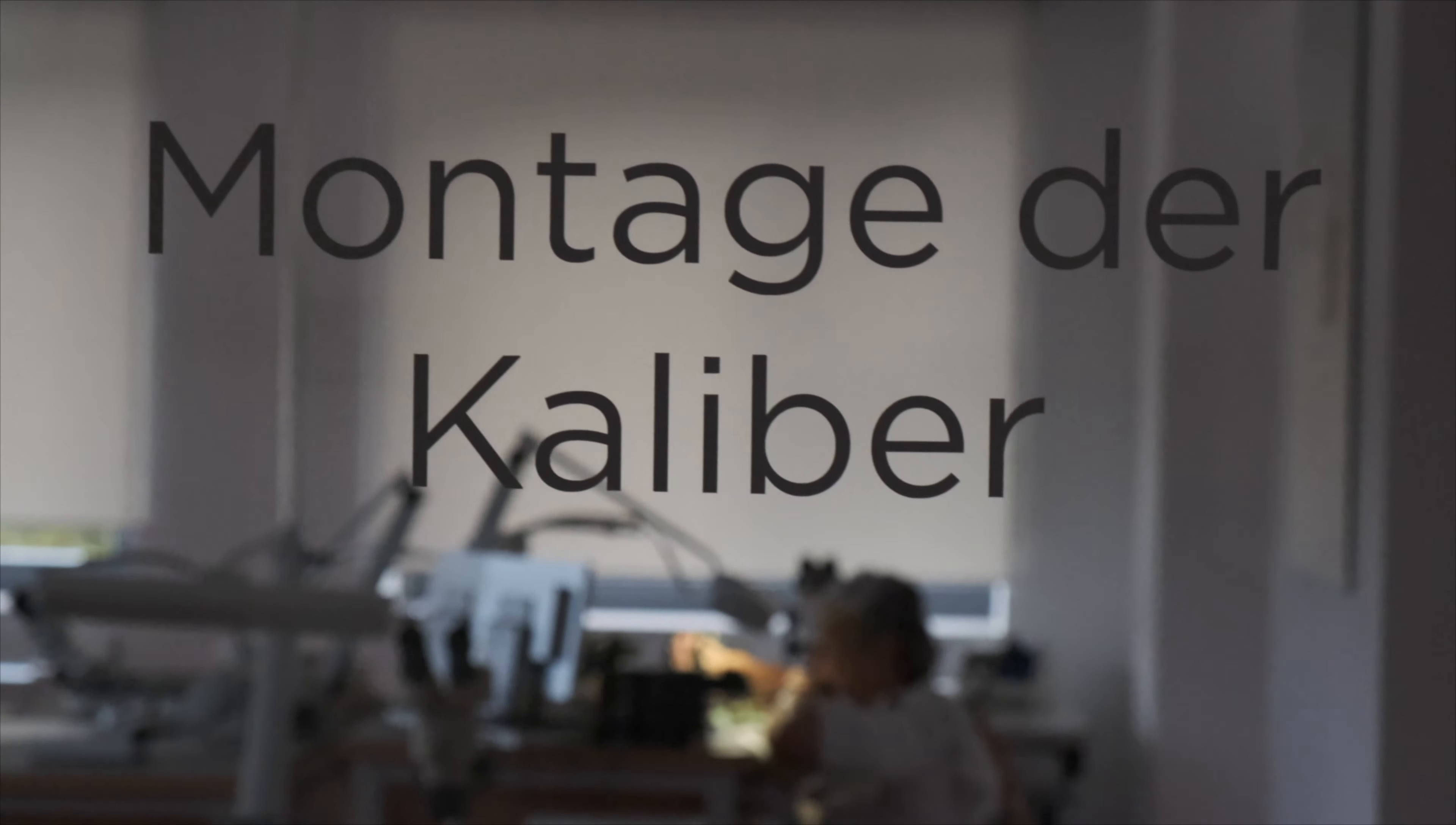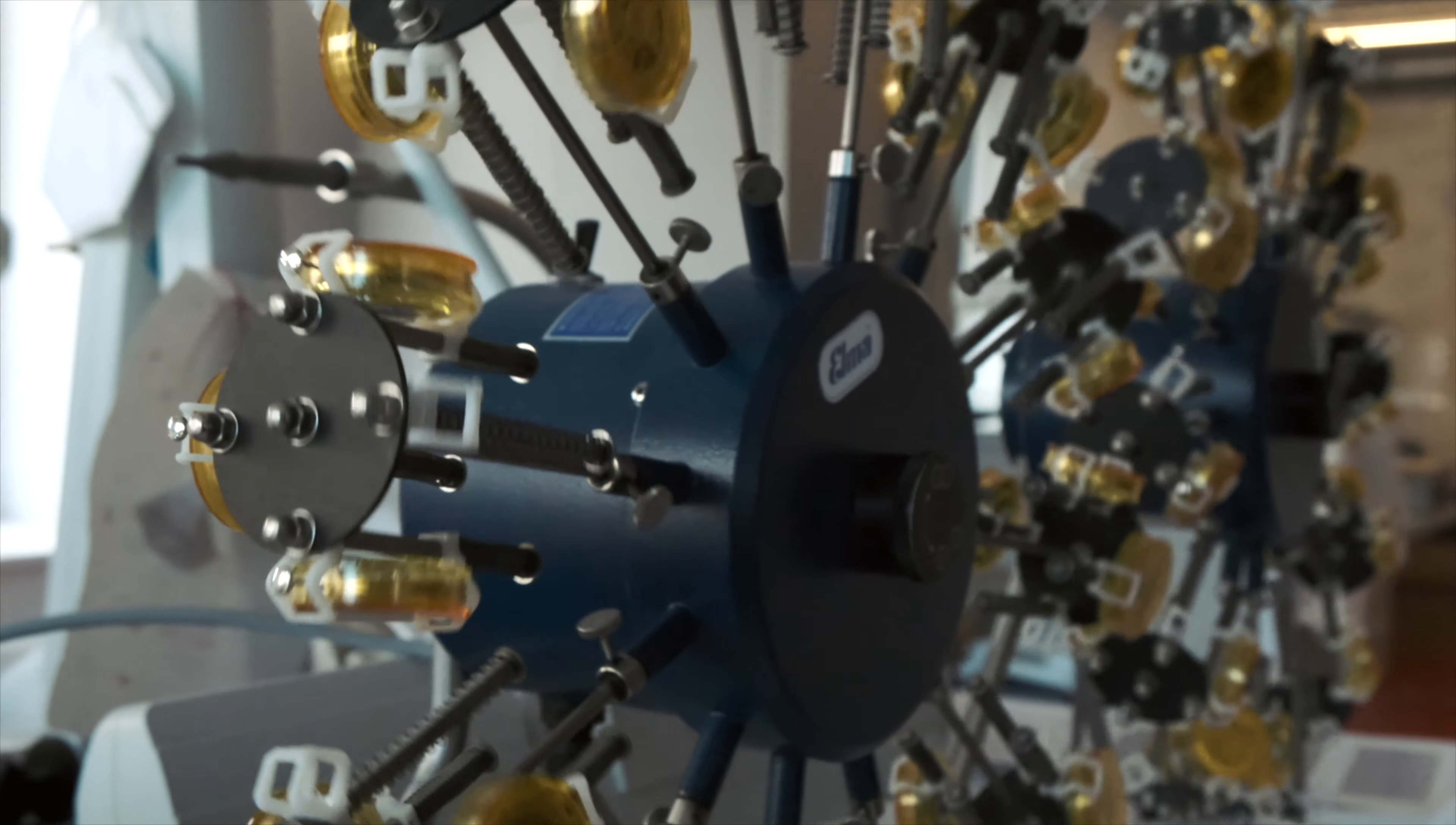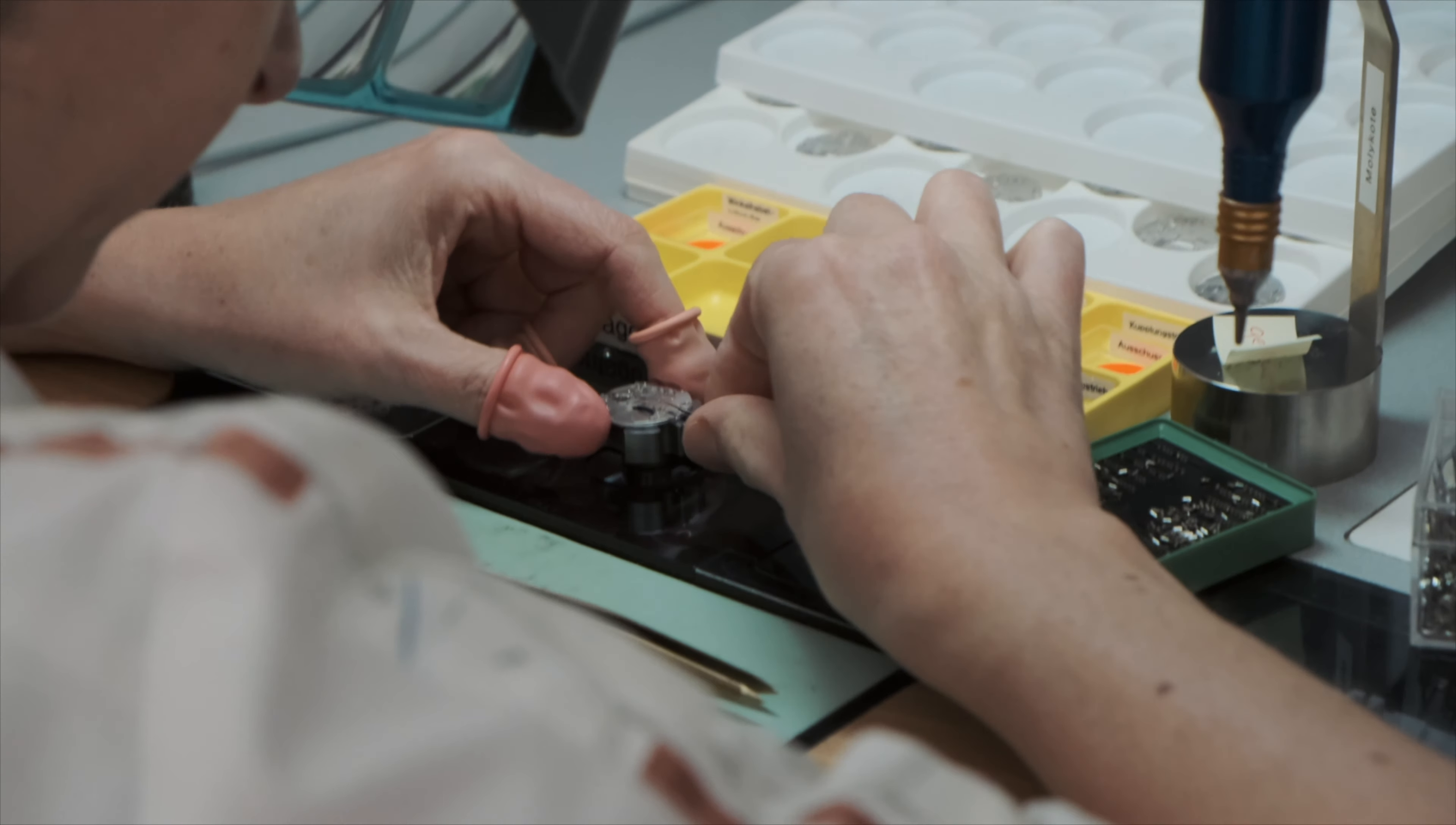We now move to the chronometrie where watchmakers will assemble the movement, test the movement, and at the very end of a long process with dial and hands in place, the calibre will be encased, turning the various parts into a fully functioning and highly reliable Nomos Glashütte wristwatch. Perhaps to add some perspective, this is where a lot of other brands just start their process, since many will have skipped the effort we have just seen at the production facility.